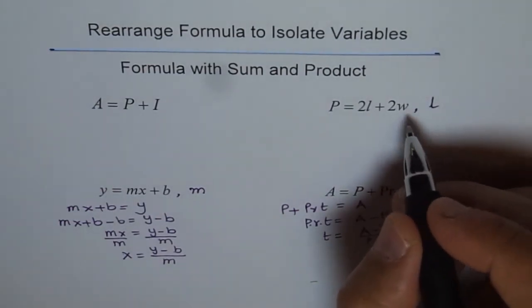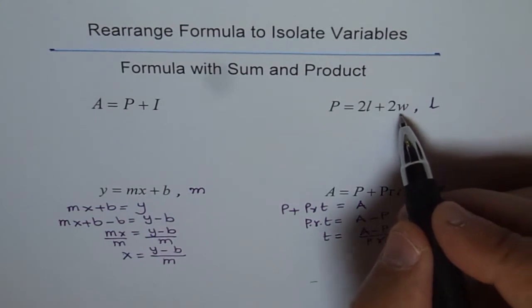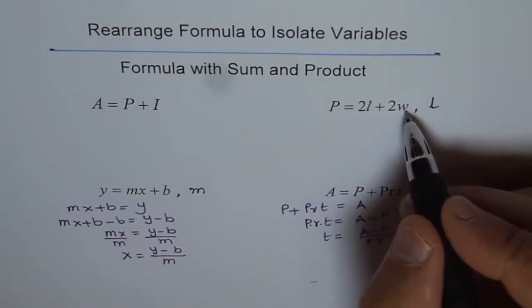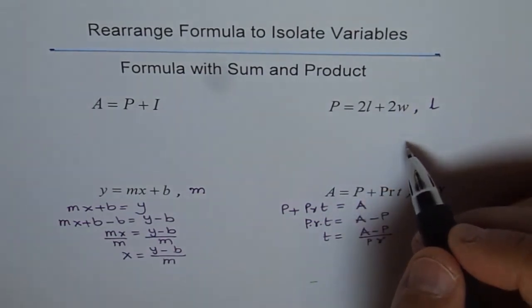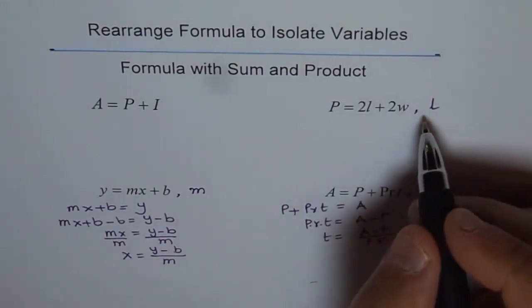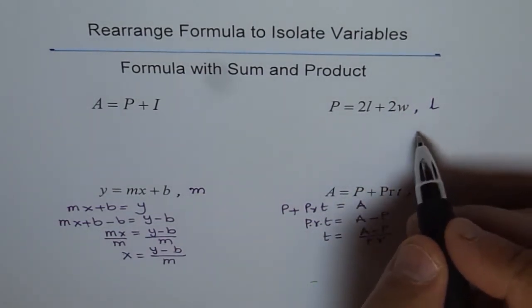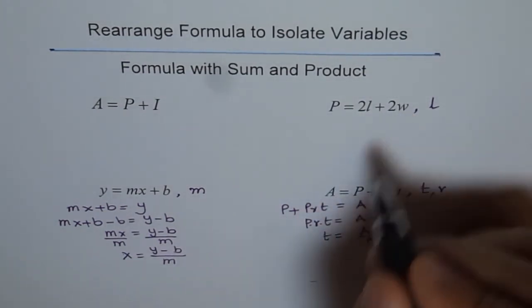As an exercise for you, you can try isolation of W. That means, writing the formula for finding out width W of a rectangle. That is what it means. So, let's first try to find out length, given perimeter and width.